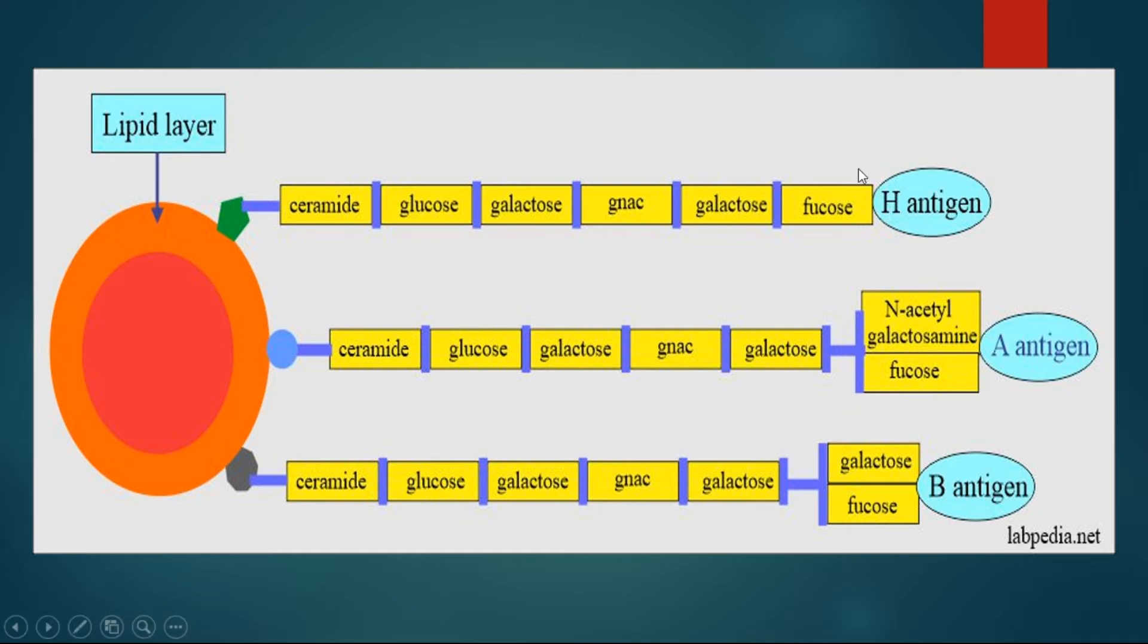When this fucosyltransferase adds this fucose to the gel structure of this carbohydrate molecule, H antigen is formed. And if this H antigen remains in the RBC plasma membrane and is not further converted into A or B antigen, the blood group will be O.